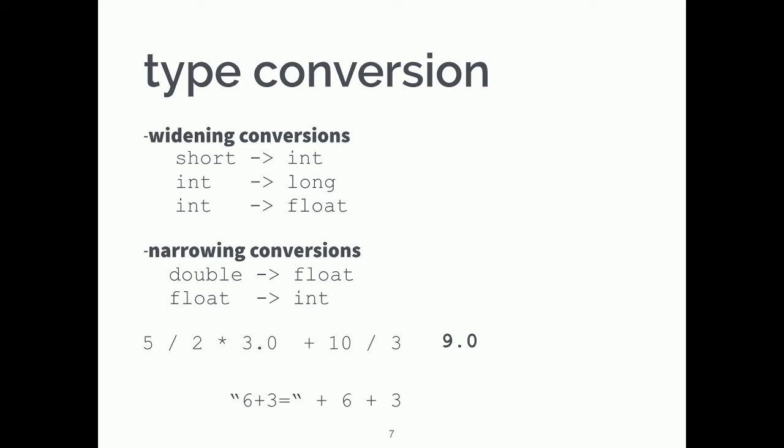One more quick example. Take 30 seconds and think about this in your head. The answer is not 9 — it's 63. Remember, order of operations: after 'six plus three equals' in double quotes, the plus operator here is string concatenation. So we do the string 'six plus three equals' concatenated with 6. Then the next plus sign is also string concatenation, which appends the 3, giving us that answer.